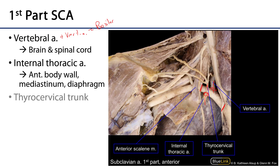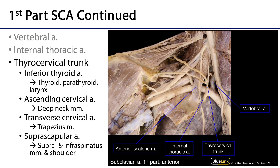Then we have the thyrocervical trunk. Thinking about the name: thyro-cervical trunk — it is a trunk that serves various elements of the neck and shoulder. There are four basic branches. There is the inferior thyroid artery, which ascends superiorly and medially to serve the thyroid gland. It is also the dominant blood supply to the parathyroid glands, and it serves the larynx via an inferior laryngeal artery, though that branching point isn't visible here.